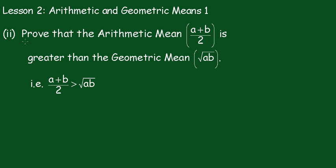To do that I'll start off with the fact that a minus b all squared must be greater than 0. Now I'll remove those brackets and we'll get a squared minus 2ab plus b squared is greater than 0. a squared plus b squared is greater than 2ab.